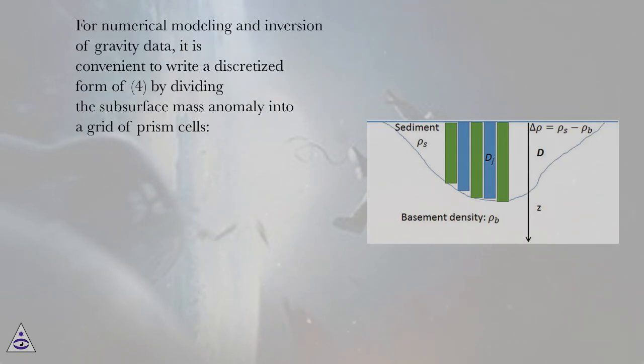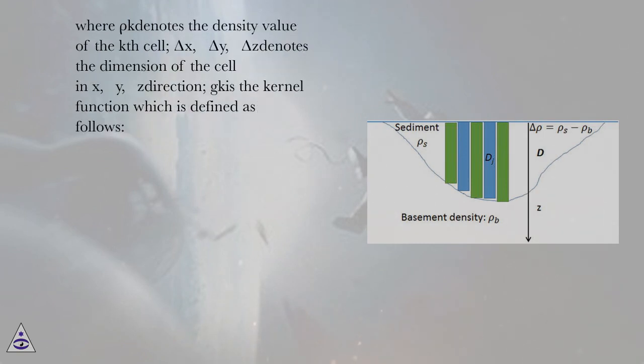For numerical modeling and inversion of gravity data, it is convenient to write a discretized form of (4) by dividing the subsurface mass anomaly into a grid of prism cells. Where ρk denotes the density value of the kth cell.